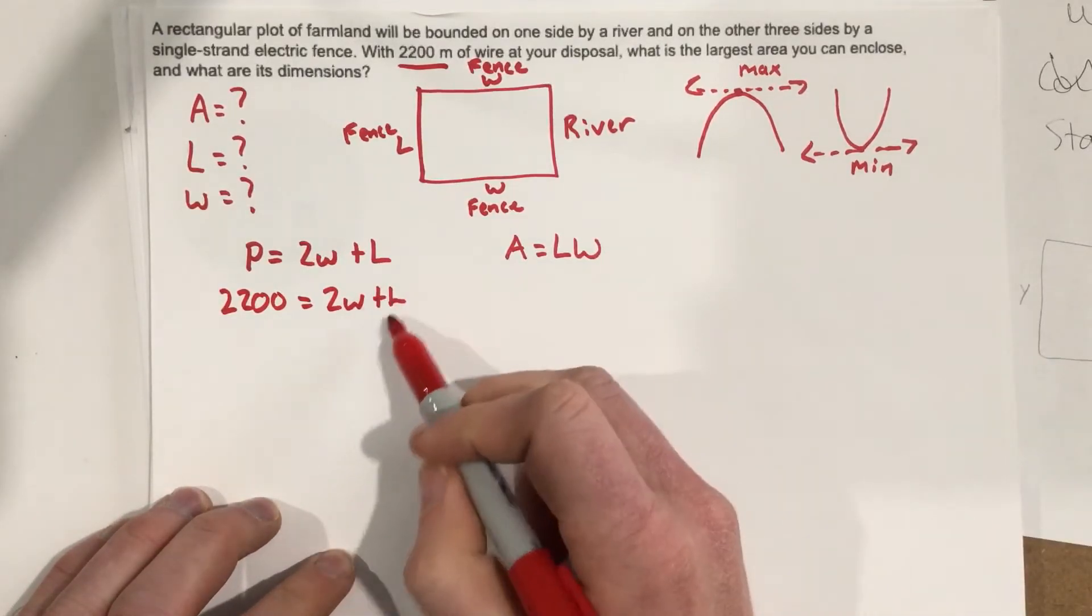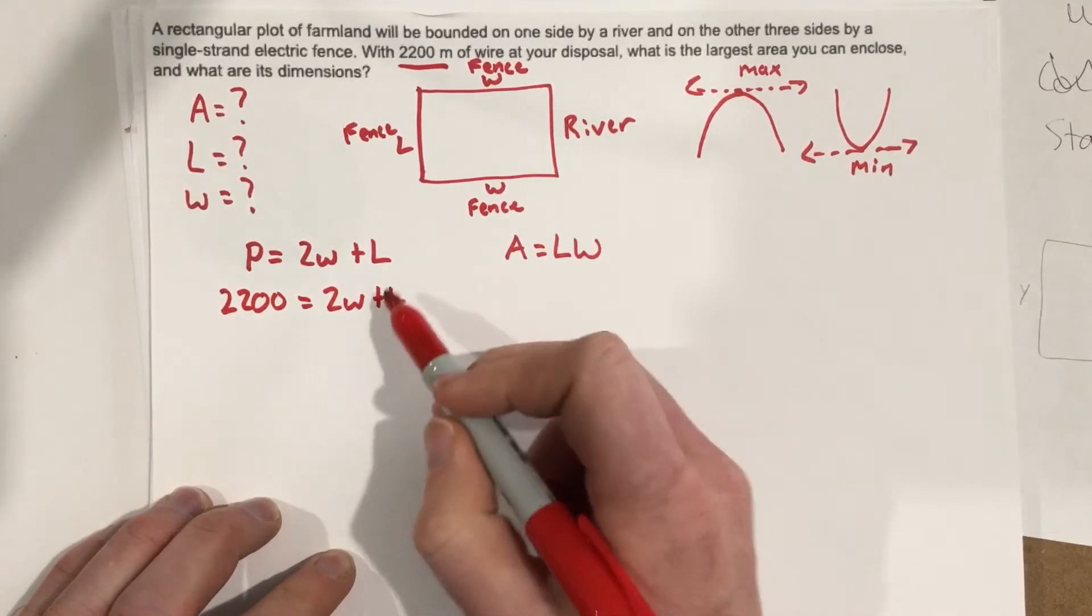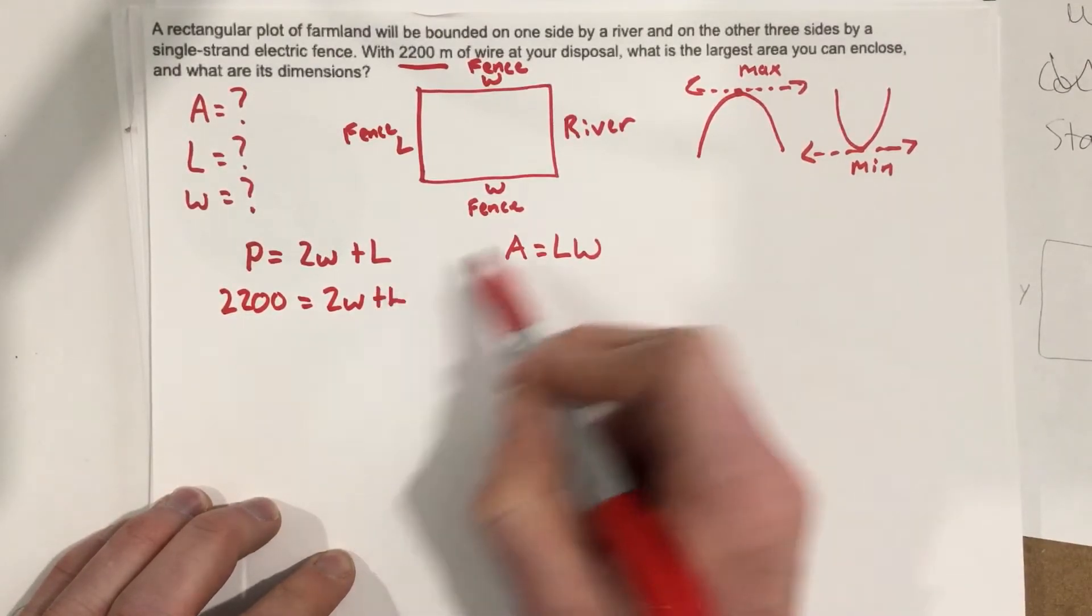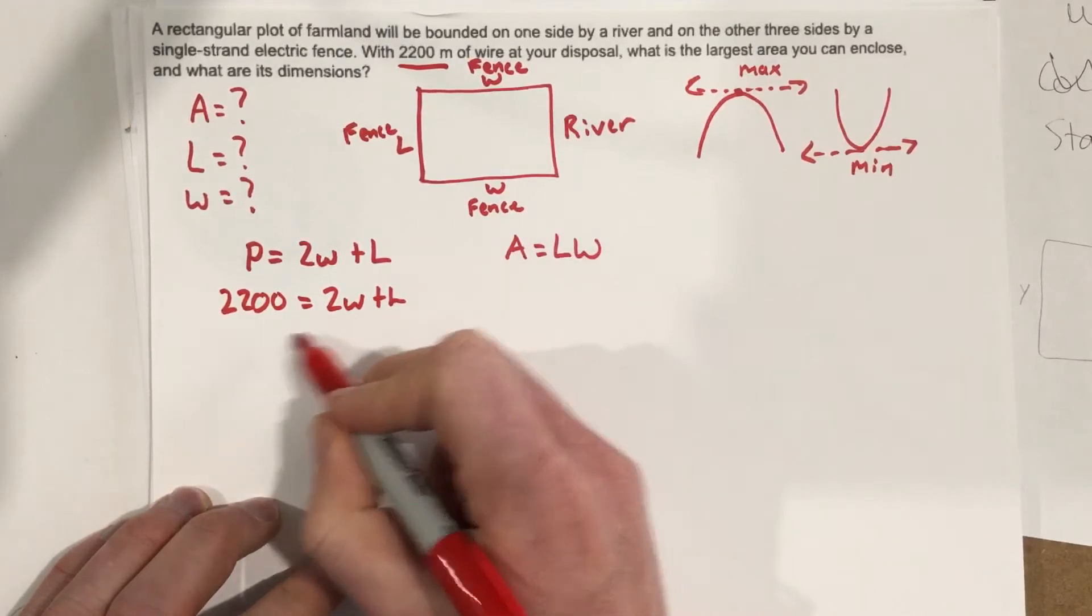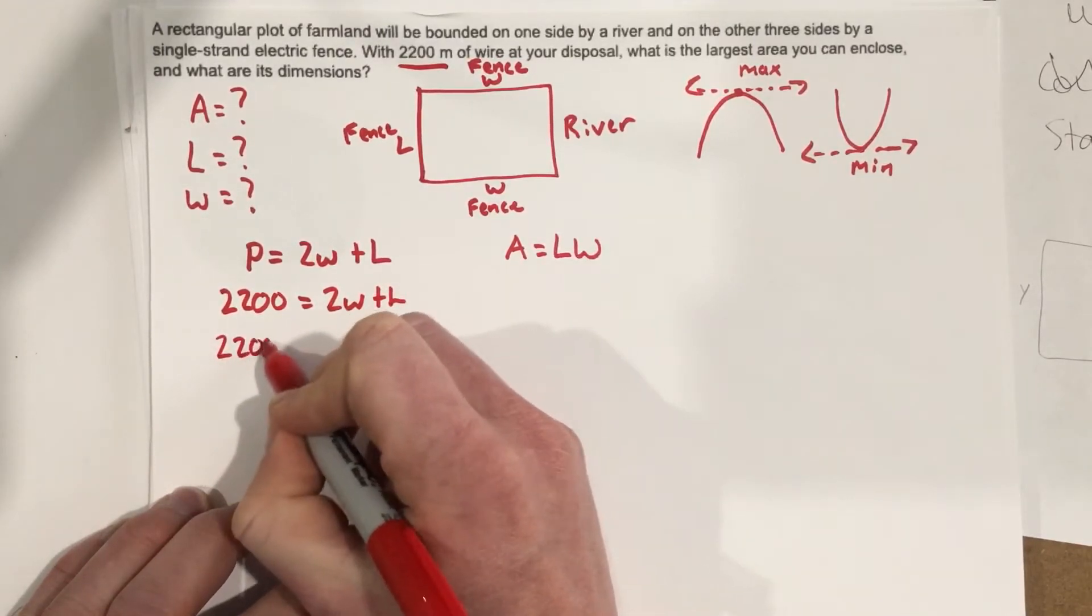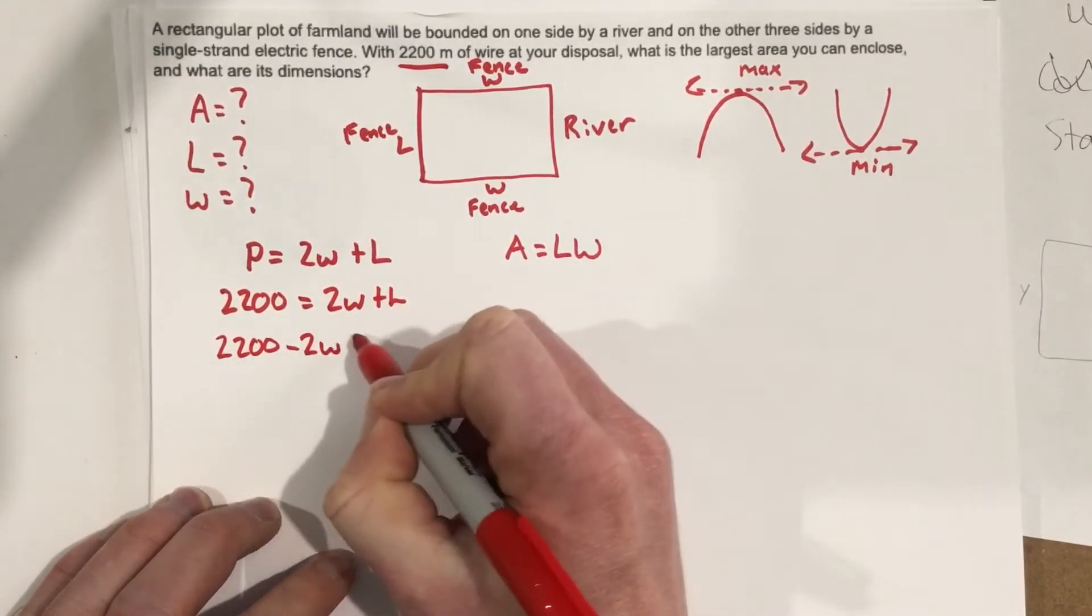So I'm going to solve for L this time, it doesn't really matter which one you do, but I'm going to solve for L, and then plug it into this equation. So, let's subtract the 2W, that's 2200 minus 2W equals L.